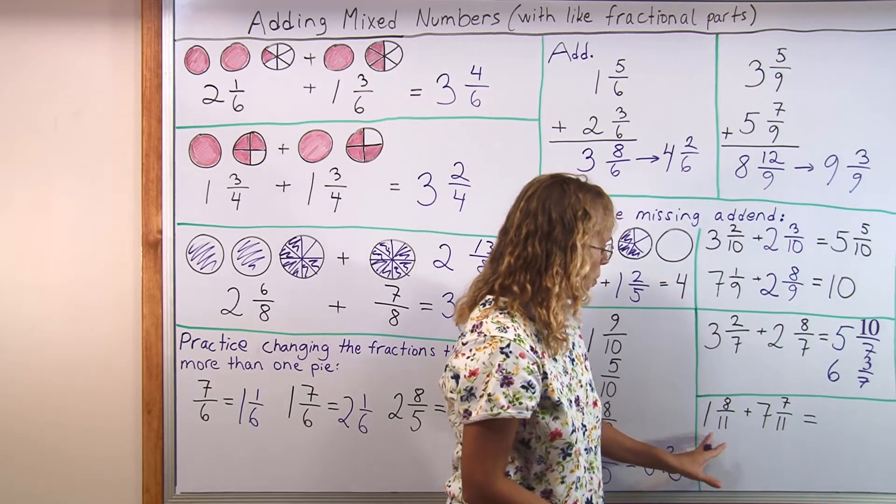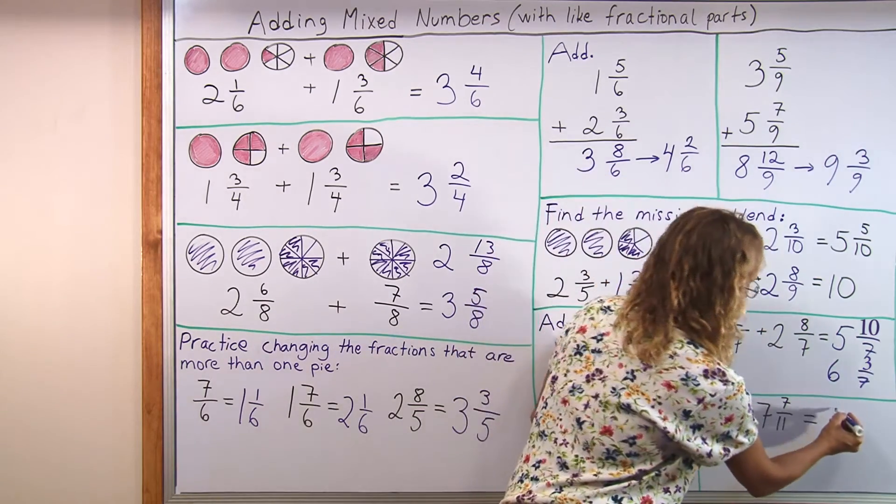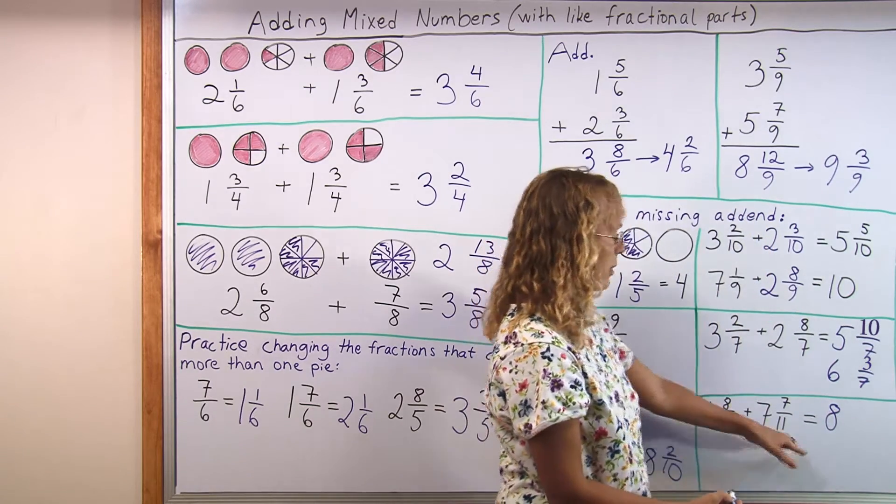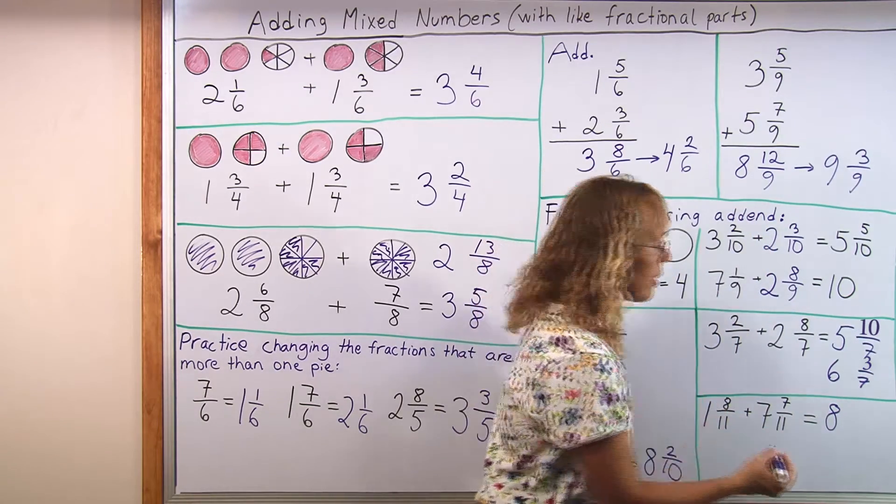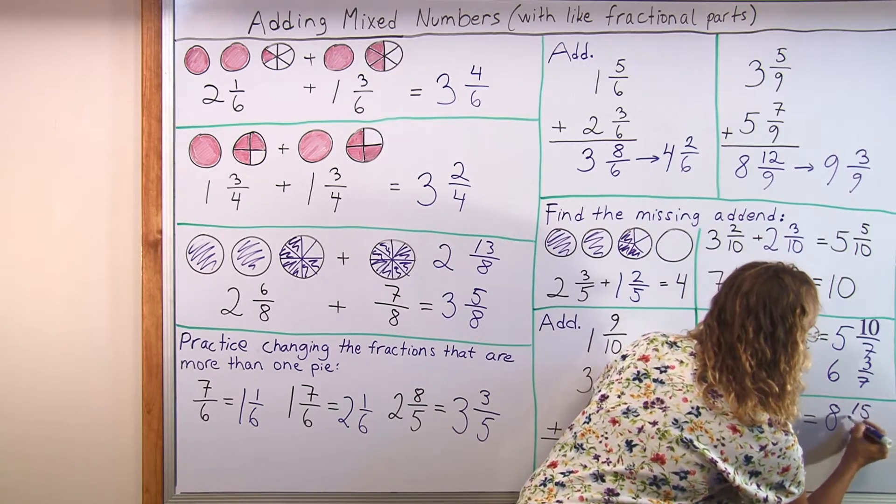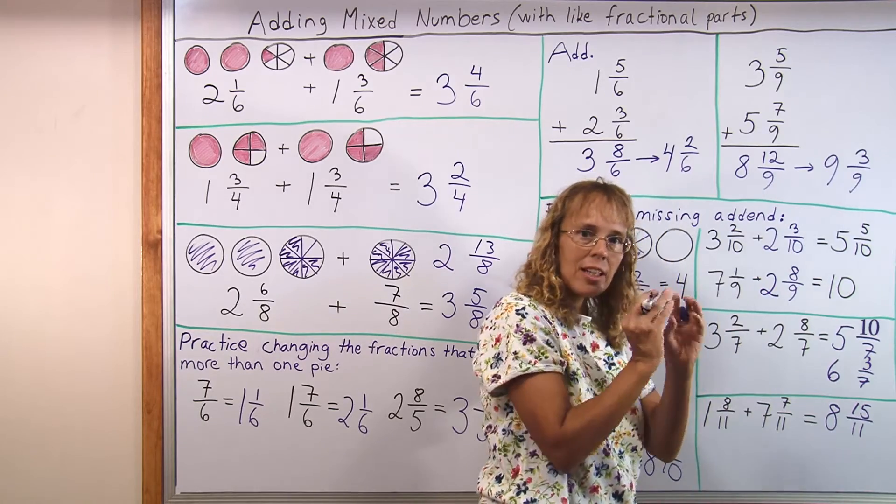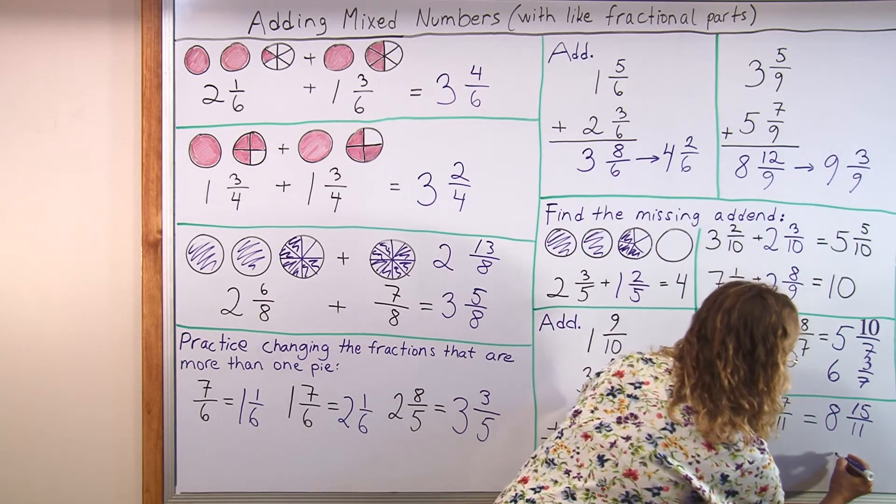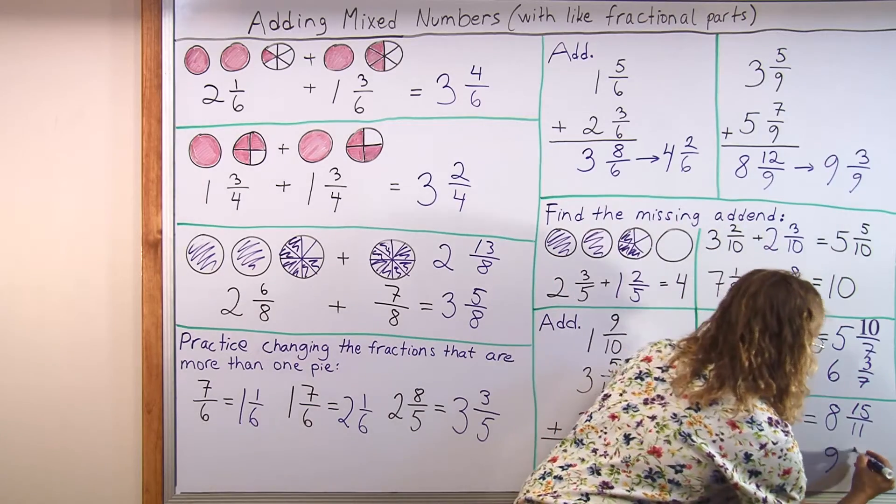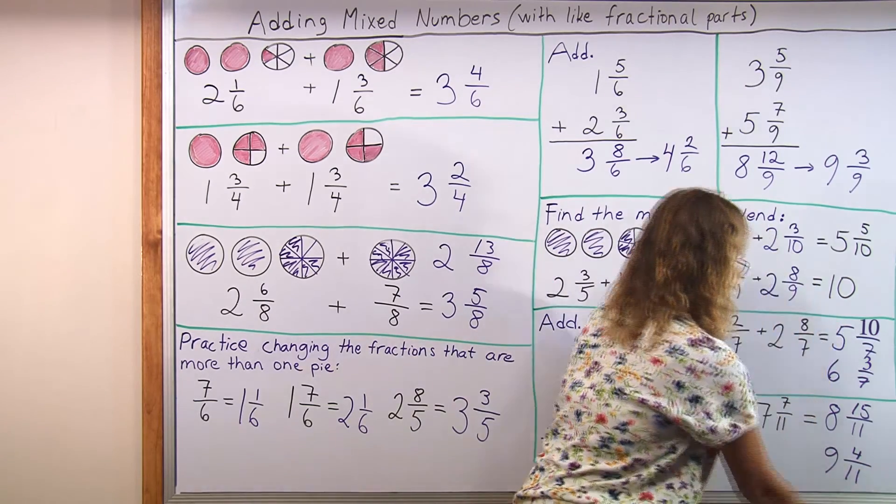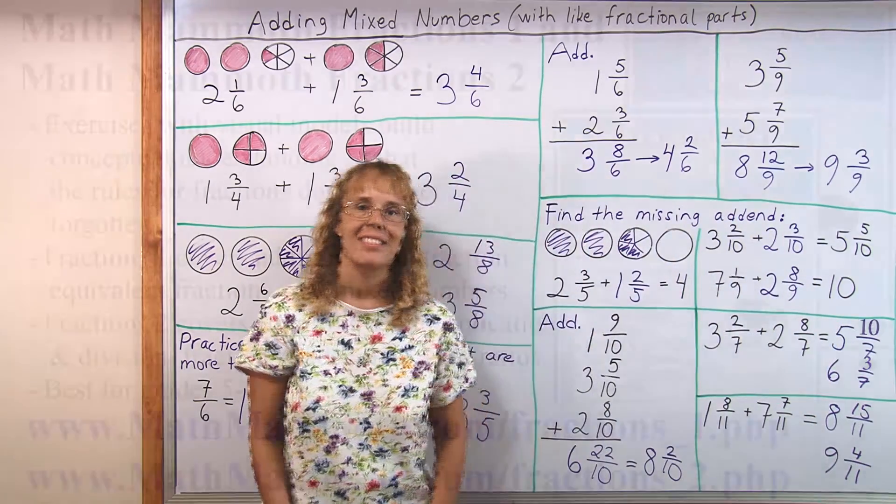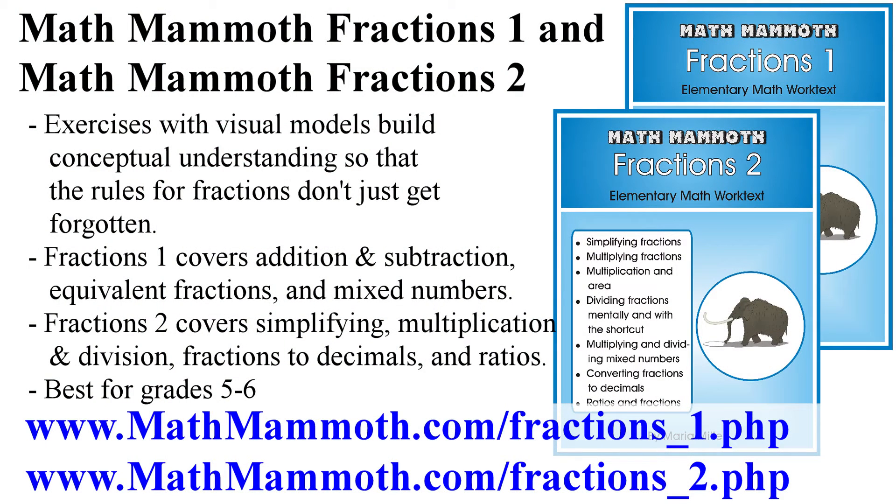So here 1 and 7 make 8 whole pies and then 8 elevenths and 7 elevenths is 15 elevenths. So from the 15 elevenths, 11 elevenths makes a whole pie. So we get 1 whole pie and then there's 4 elevenths left over.